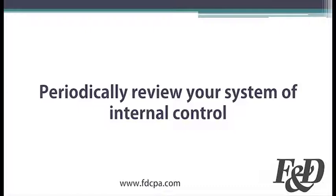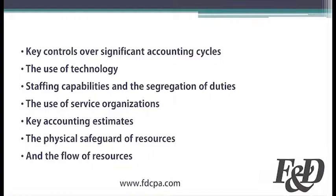Management should establish a cyclical approach for the review and revision of controls that encompasses key controls over significant accounting cycles, the use of technology and its impact on financial reporting and the external exchange of information, financial management staffing capabilities, the adequate segregation of duties, the use of service organizations and the evaluation of their control policies and procedures, the basis for key accounting estimates, the physical safeguard of resources susceptible to misuse or misappropriation, and the flow of resources within the organization.